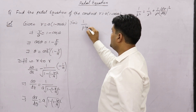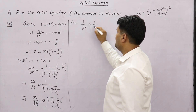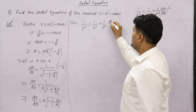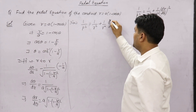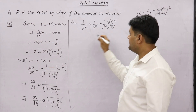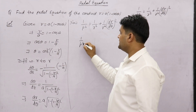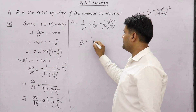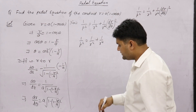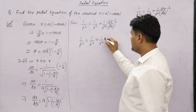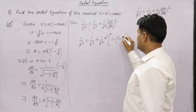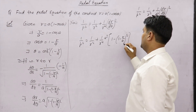Now, 1/p² = 1/r² + (1/r⁴)(dr/dθ)². So we substitute the expression for dr/dθ: (dr/dθ)² = a² × (1 - (1 - r/a)²).